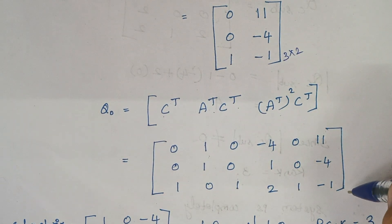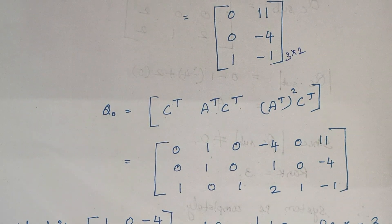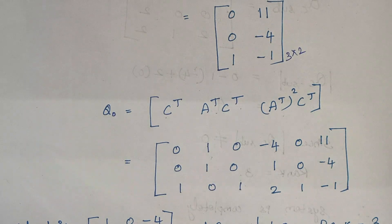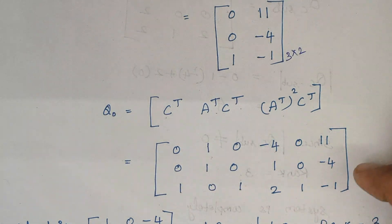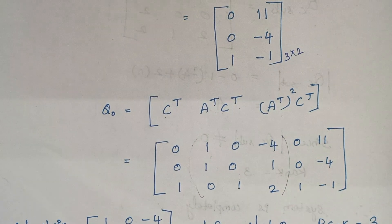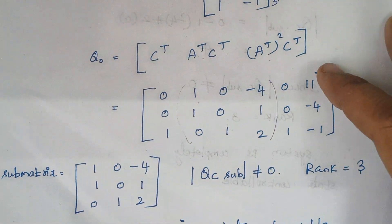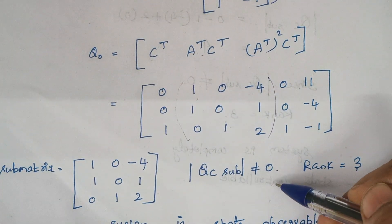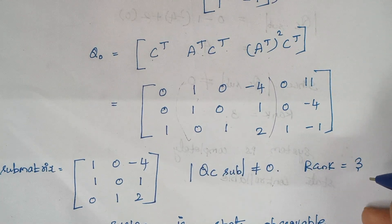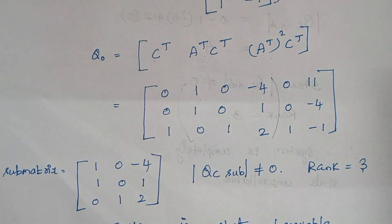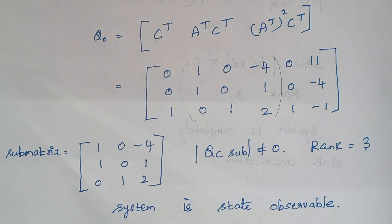This is your Q₀ matrix. The next step is to find the determinant of a 3×3 submatrix — you can select any part according to your wish. Here we selected this part. When you calculate the determinant, the value is not equal to 0. Therefore the rank of the matrix is equal to 3, and the system is said to be completely state observable.